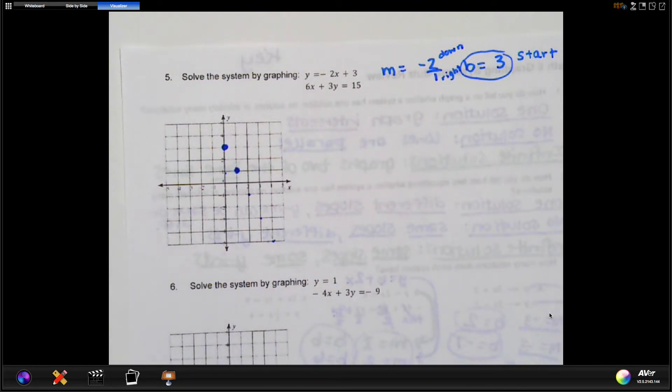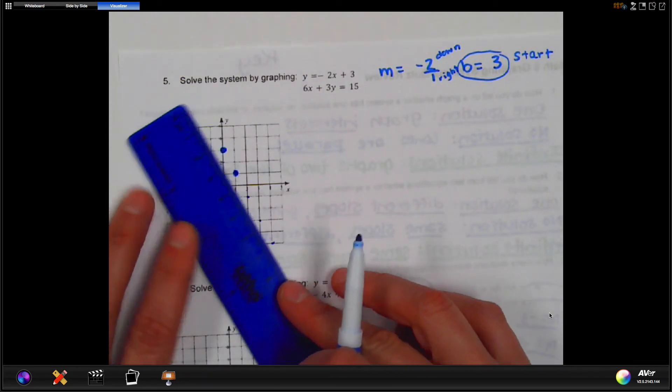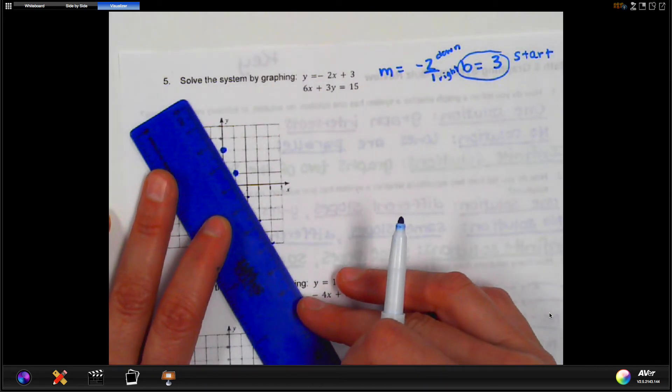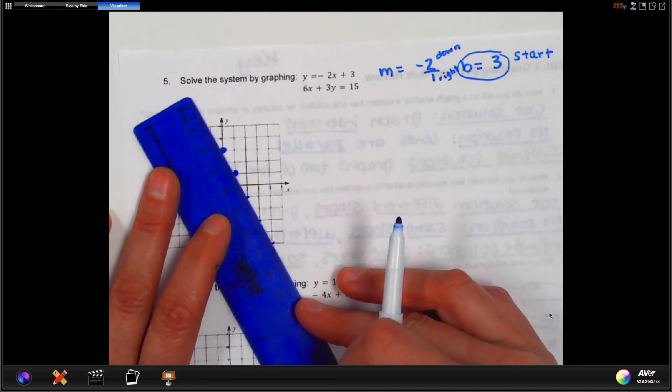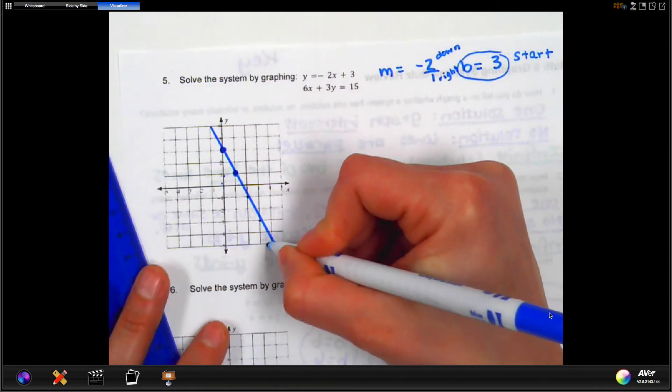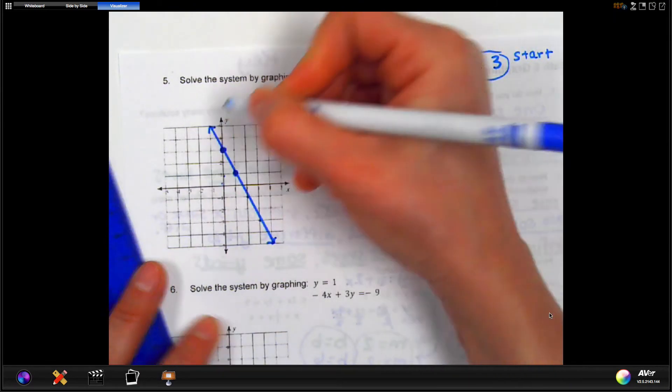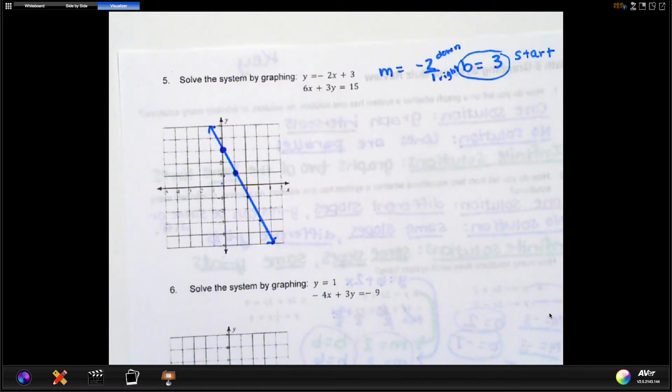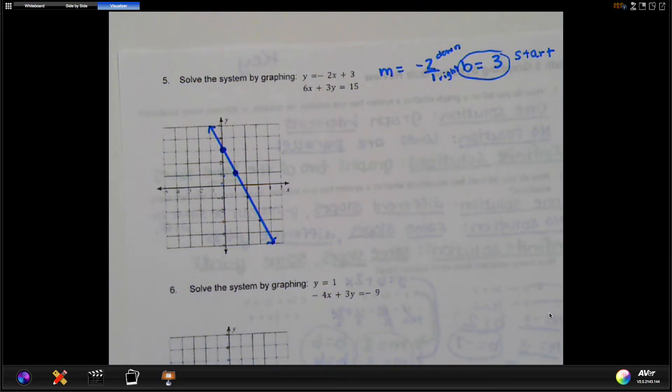And then your graph will be way more accurate than just using your ruler, which you can use. But now we're going to use the ruler and go through those points that we made, and there is our first graph line. That one's done. Okay, now we're going to do this again, but we're going to do it with the second graph.